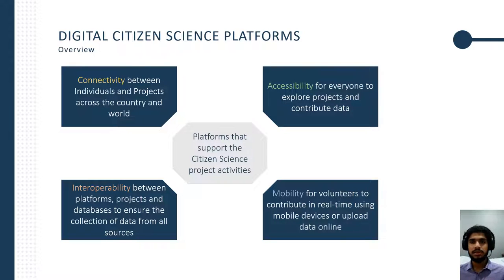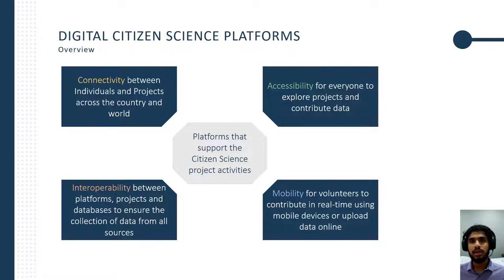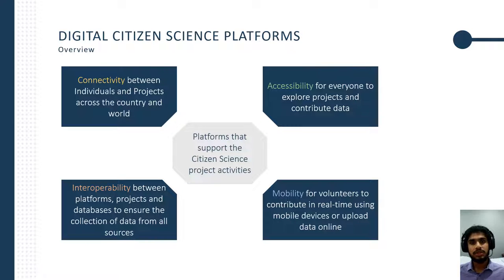Defining digital platforms in citizen science can take varied interpretations. How I see it is that digital platforms have a core purpose of data collection, processing, analysis, and aggregation. However, in recent years, digital platforms play a broader role, such as facilitating social interaction and promoting a community environment. On the screen I have four advantages highlighted: connectivity between individuals and projects, which has connected citizen science around the world; accessibility for any types of volunteers or projects; interoperability, which links towards data sharing where data from different projects can be aggregated and analysed; and finally, mobility, where mobile phones have enabled volunteers to contribute data in real time.